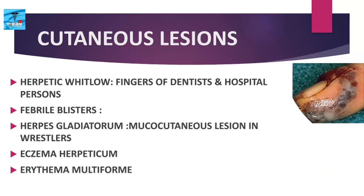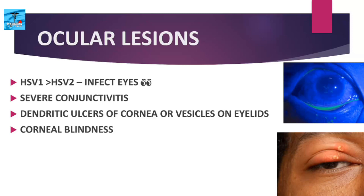For ocular lesions, HSV1 is more common than HSV2 in eye infections. Severe conjunctivitis is the most common manifestation. Corneal lesions can develop into dendritic ulcers of the cornea or vesicles on the eyelids. Involvement of the corneal stroma may cause opacity and blindness. HSV1 infections are second only to trauma as a cause of corneal blindness. A figure shows severe conjunctivitis with a dendritic ulcer.